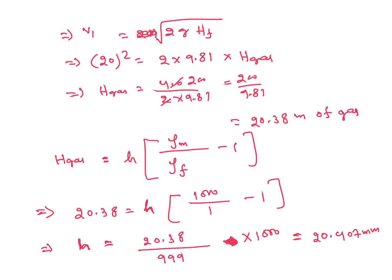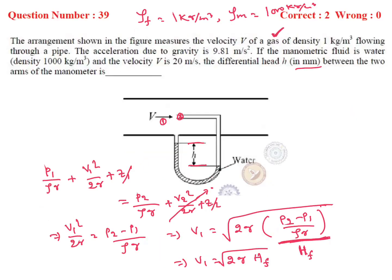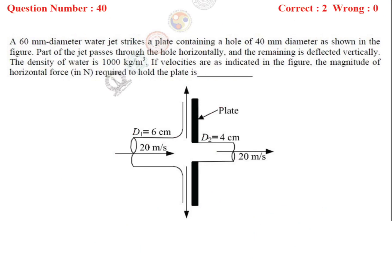Next question: part of a water jet passes through horizontally and the remaining is deflected vertically. Density of water is 1000 kg/m³. The velocities are as indicated in the figure. We need to find the magnitude of the horizontal force in Newtons required to hold the plate. Data given: D1 = 6 cm (inlet pipe diameter) and velocity information provided.